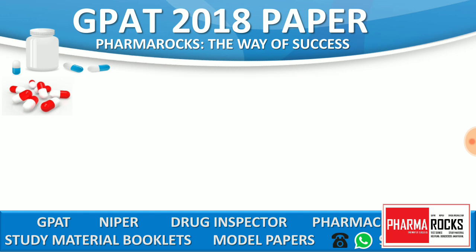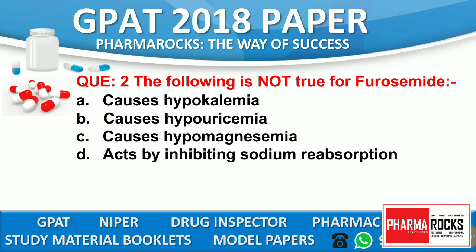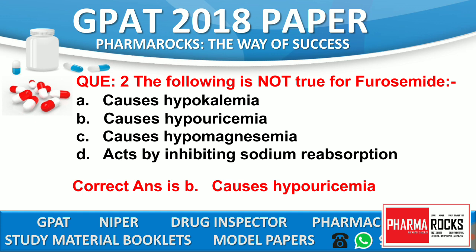Question number 2: The following is not true for furosemide. Option A: It causes hypokalemia. Option B: It causes hypouricemia. Option C: Hypomagnesemia. Option D: Acts by inhibiting sodium reabsorption. We have to find out the incorrect option for furosemide. The correct answer is B — furosemide does not cause hypouricemia, so that is the wrong option.